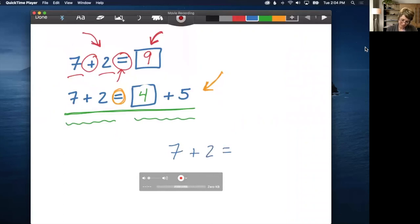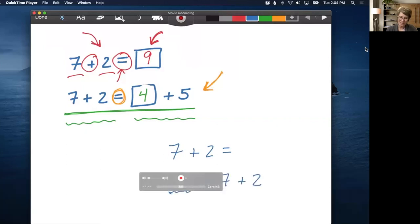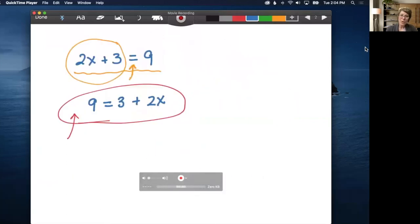Write it so they understand that the equal sign is not about an operation. It's about a relationship between what's on one side and what's on the other. So when we get to algebra, they don't run into this issue here.